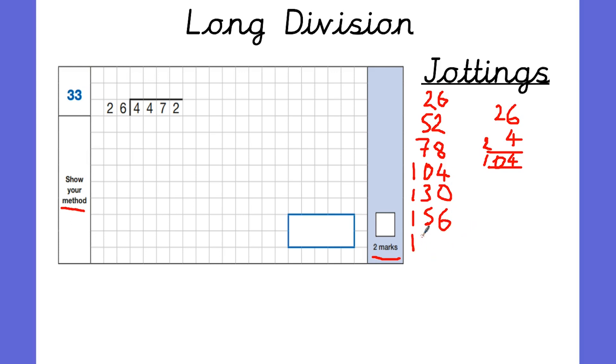So 26 added to this would be 1, 2 added to 5 is 7 and then 6 add 6 is 12. So that would actually be 182. So we have our jottings there. Now we can go ahead and try to solve this.